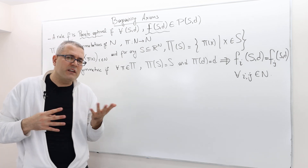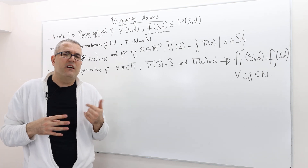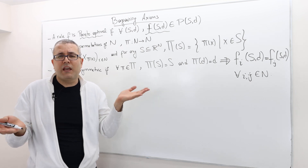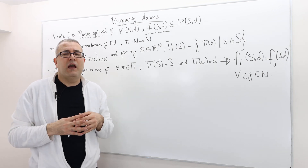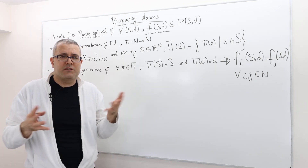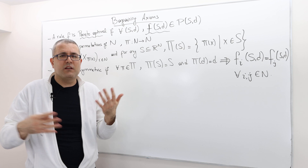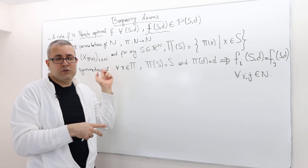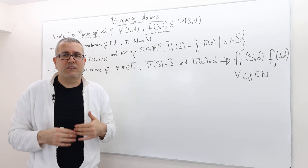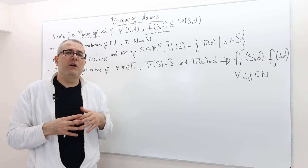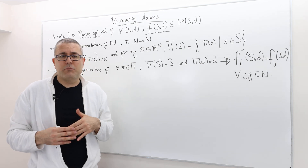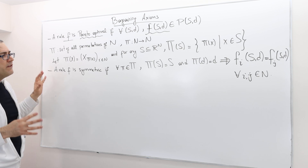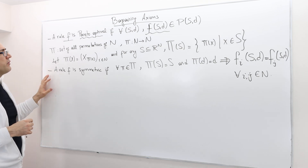That's kind of a fairness idea. For example, if they're going to split the cake and the players are risk neutral — so it's a perfectly symmetric problem — then the solution should also be symmetric. So how do we define a symmetric problem?